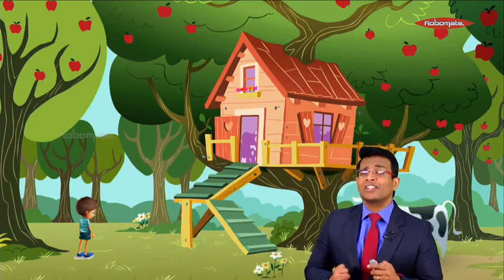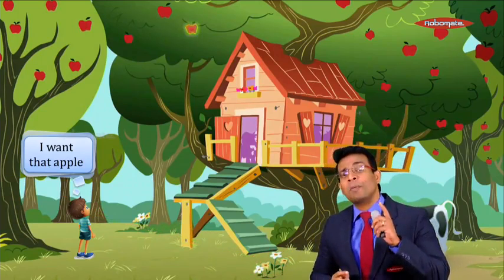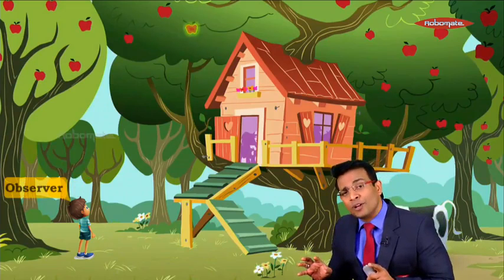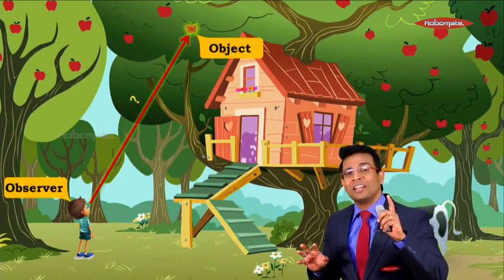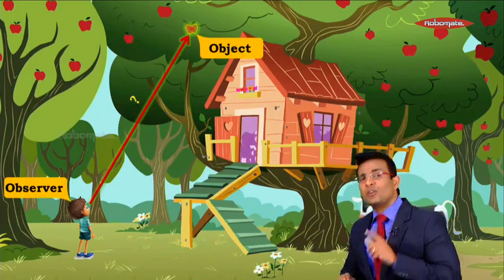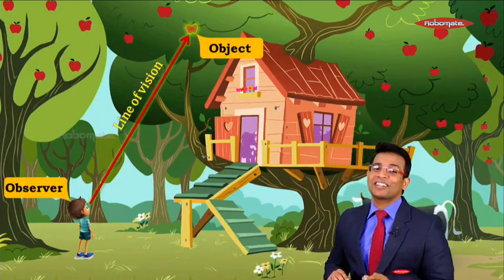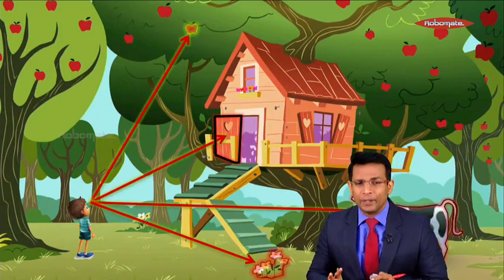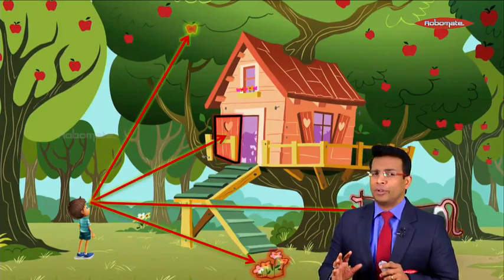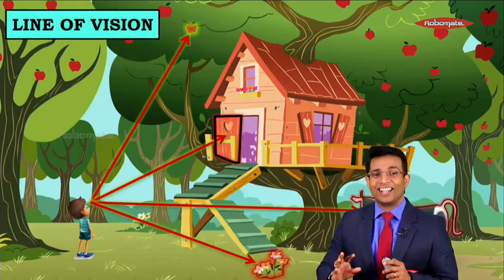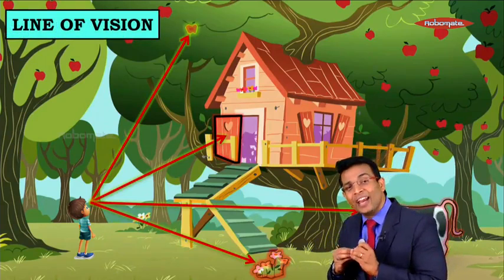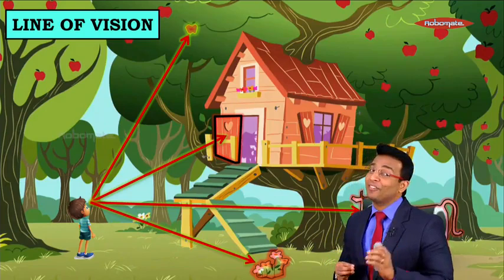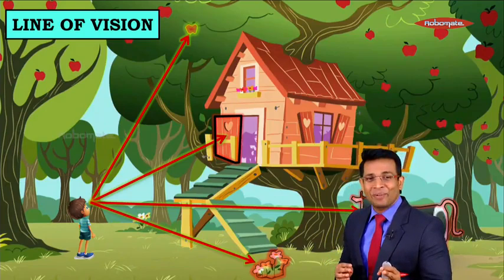Now Raj wants the apple on the tree. He is the observer, the apple is the object, and the straight line connecting his eye to the apple is the line of vision. So we now understand what the line of vision is — wherever an observer observes an object, the line connecting his eye to the object is called the line of vision. That is the first concept, and it's very simple.